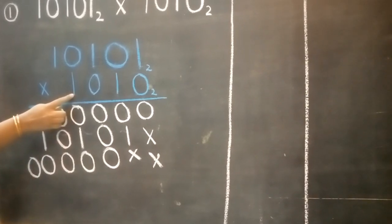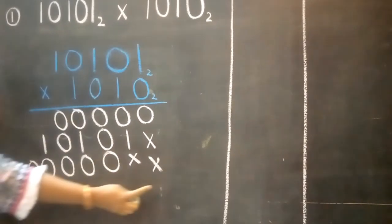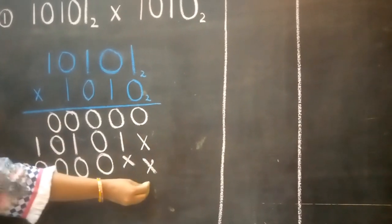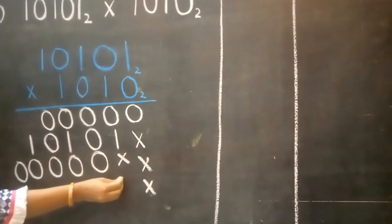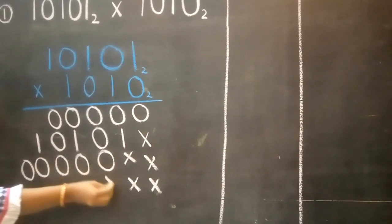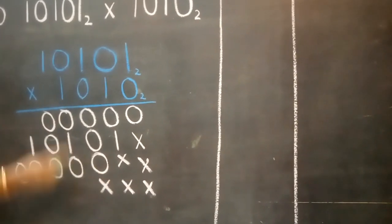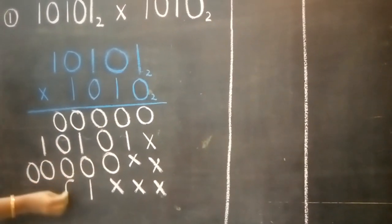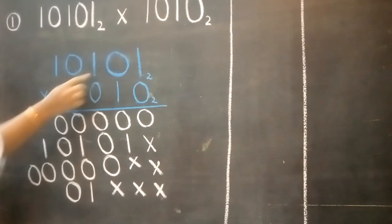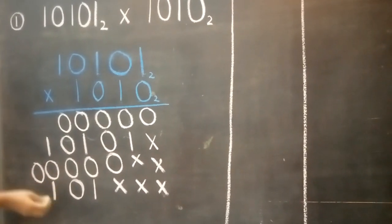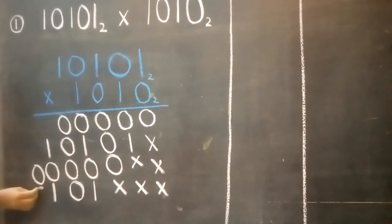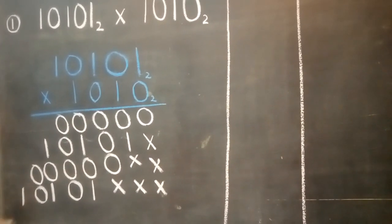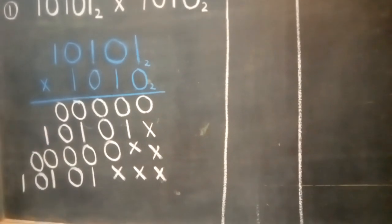Now we will multiply our fourth digit. So we will put three crosses over here since we are starting from the fourth place. 1 ones are 1, 1 zeros are 0, 1 zeros are 0, 1 ones are 1. Now our multiplication is over.